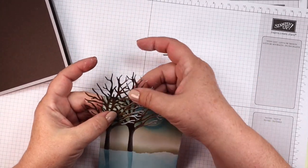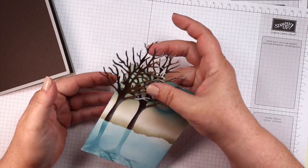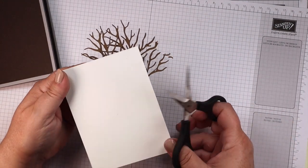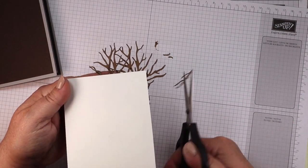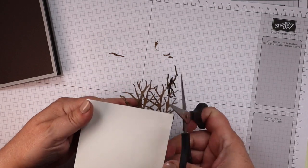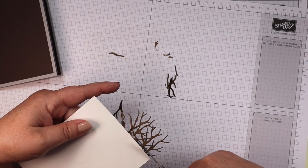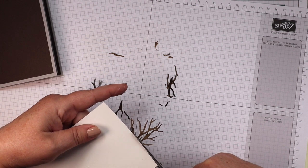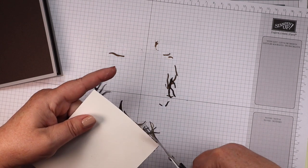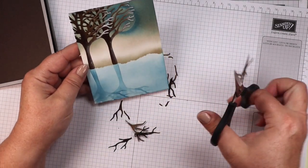And take a pair of paper snips, turn it over so I can see well, and clip it flush with our panel. And it looks like that.